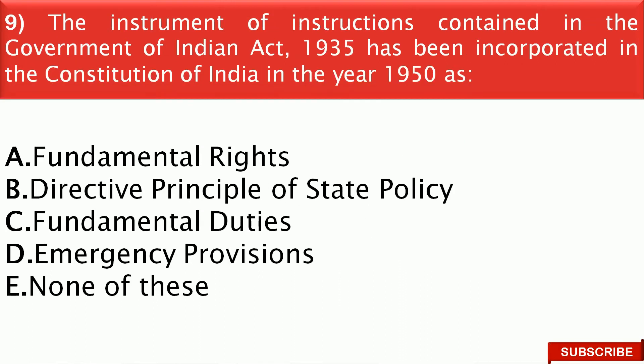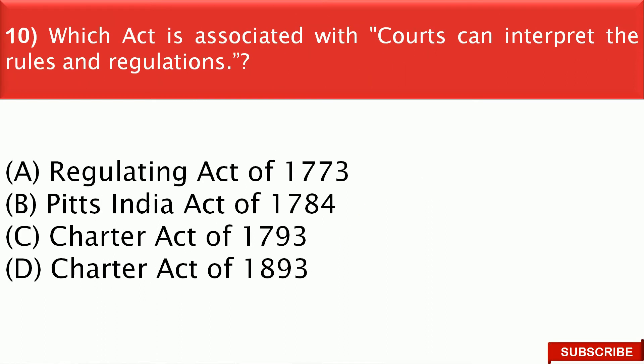Next question: The instrument of instructions contained in the Government of India Act 1935, incorporated in the Constitution of India in the year 1950, was incorporated as — the right answer is option D, that is the emergency provisions. Next question: Which act is associated with courts being able to interpret the rules and regulations? The right answer is option C — that is the Charter Act of 1793.